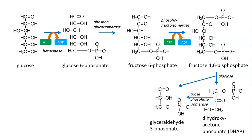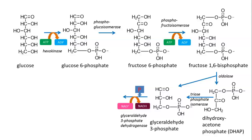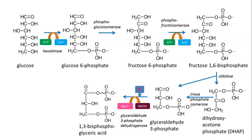These two G3P molecules continue on. NAD is used to create NADH, and phosphorus is imported in. The enzyme glyceraldehyde 3-phosphate dehydrogenase gives us two molecules of 1,3-bisphosphoglyceric acid. You can see these have two phosphoruses on them — one phosphorus is a bit more tightly bound than the other. ADP picks up the phosphate from one, transferring it to ADP to make ATP.